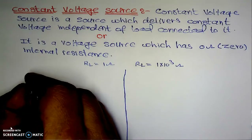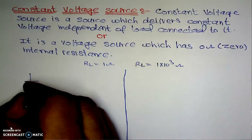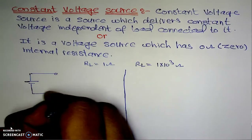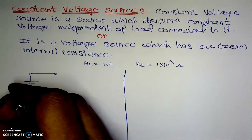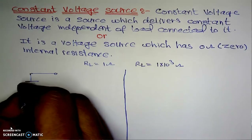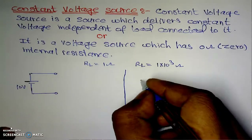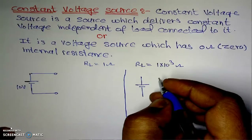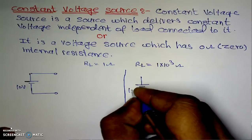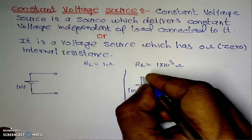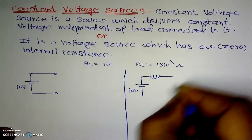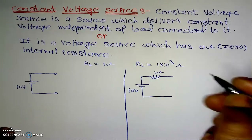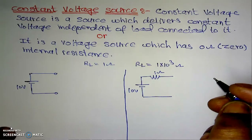In the first case, we consider a source with zero internal resistance — a 10-volt voltage source. In the second case, we again consider a 10-volt voltage source, but with a small internal resistance of 1 ohm.